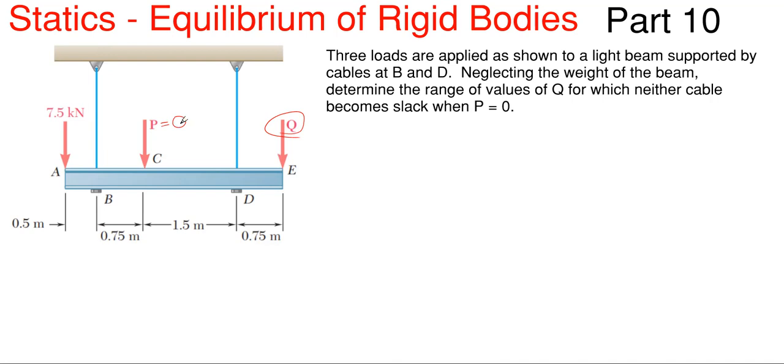So it makes it a little bit easier when P is equal to 0 so we don't have to worry about it. So what we're going to have to do is that we're going to have to sum moments at each of these points B and D.